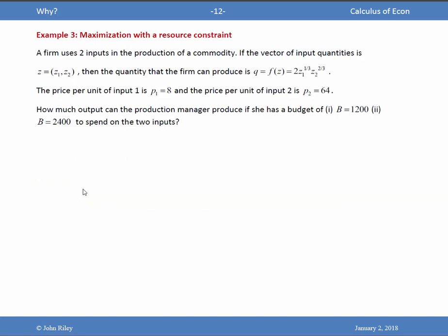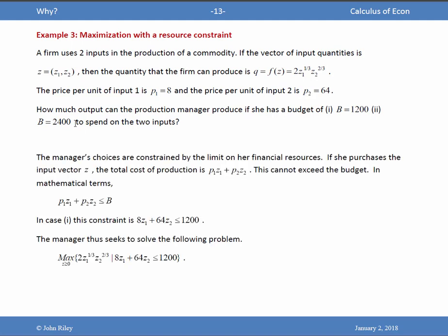For our third example, we're going to consider maximization with a resource constraint. These kinds of constraints are very common in economics. In our example, a firm uses two inputs in the production of a commodity. If the vector of input quantities is Z, which is an array Z1, Z2, then the quantity that the firm can produce is a function of this input array. And here is the function. The price per unit of input 1 is 8. The price per unit of input 2 is 64. How much output can the production manager produce if she has a budget of $1,200 and then $2,400 to spend on the two inputs?